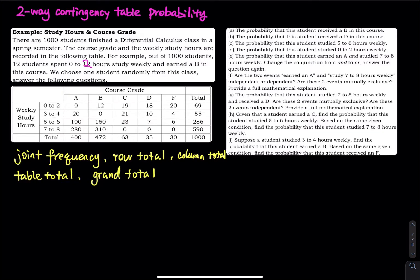The first keyword is joint frequency. These numbers in the table are all joint frequencies. The 12 students is right here. We call them joint frequency because the 12 corresponds to both a course grade and the number of hours these 12 people spend studying every week. Every number in this box corresponds to two statuses: a course grade and the hours.